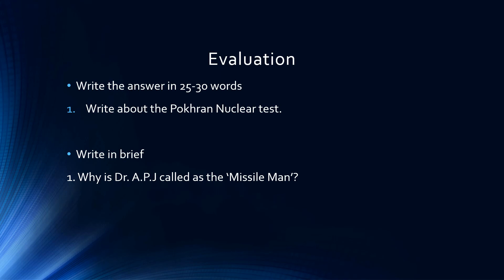The next question asks you to write in 25 to 30 words about the Pokhran nuclear test — you can write about both the first and second tests, mentioning the date, the reason, and the people responsible. The final question asks why Dr. APJ Abdul Kalam was called the Missile Man of India — refer to the 'Do You Know' slide on his contributions; because of his work, he is known as the father of India's missile programme and hence referred to as the Missile Man.